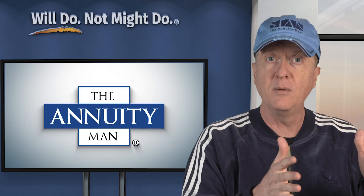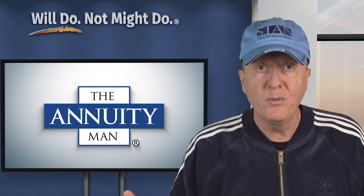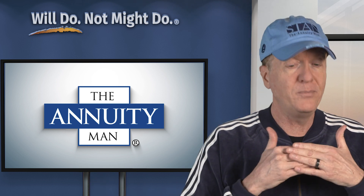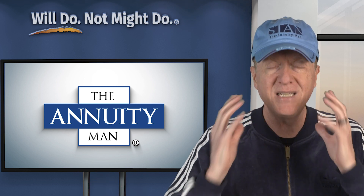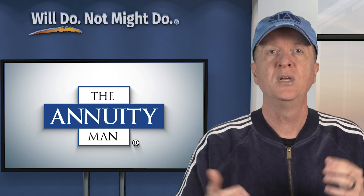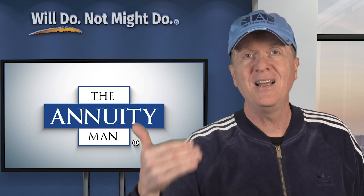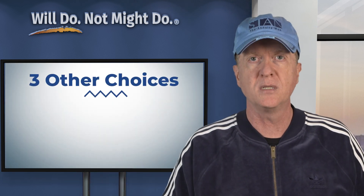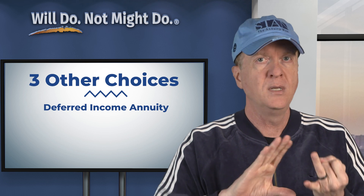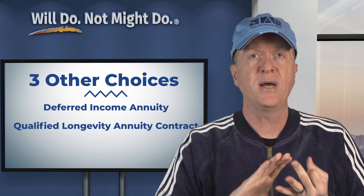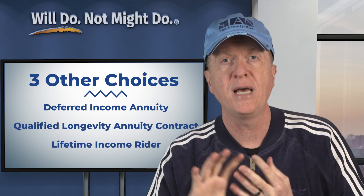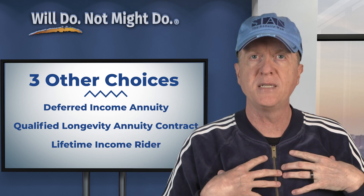For lifetime income now, single premium immediate annuities are the easiest to understand choice. Income starts as soon as 30 days and as late as one year. Once you're past one year, there are three other choices: deferred income annuities, qualified longevity annuity contracts, and income riders attached to indexed annuities.